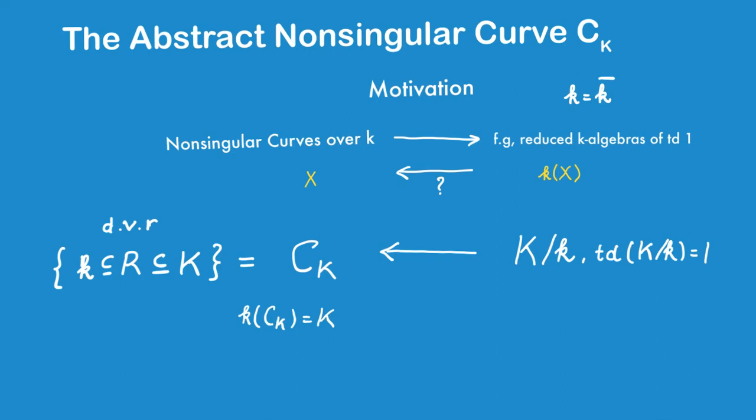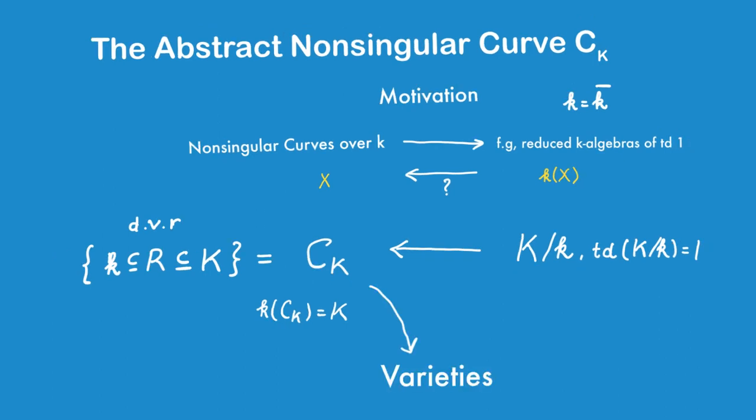Now, that's a bit confusing. What does it mean for a set of discrete valuation rings to be a curve? That's not a curve in the sense that we're used to. So what we'll do is that we'll put on this a topology and a structure sheaf, and then we will extend the category of varieties to include such objects.